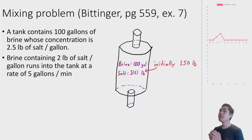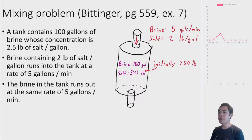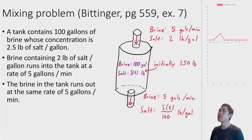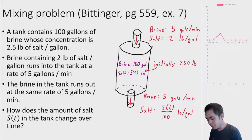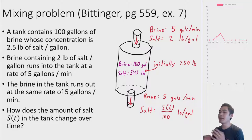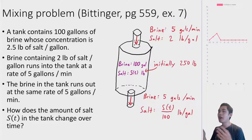We're going to run brine containing 2 pounds of salt per gallon into the tank at the rate of 5 gallons per minute. And brine in the tank is going to run out at the rate of 5 gallons per minute. We assume the tank is perfectly mixed, so the brine going out has S(T) divided by 100 pounds per gallon of salt in concentration. The question is: how does the amount of salt S(T) in the tank change over time? We need to figure out how quickly salt goes in and how quickly it leaves.